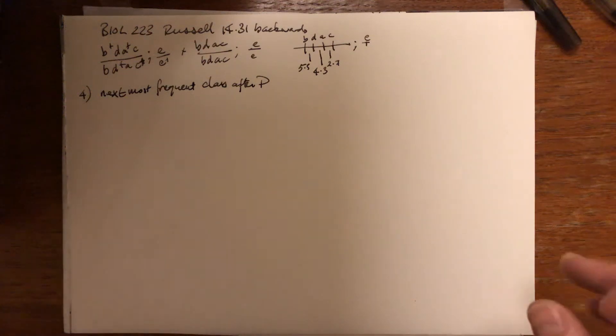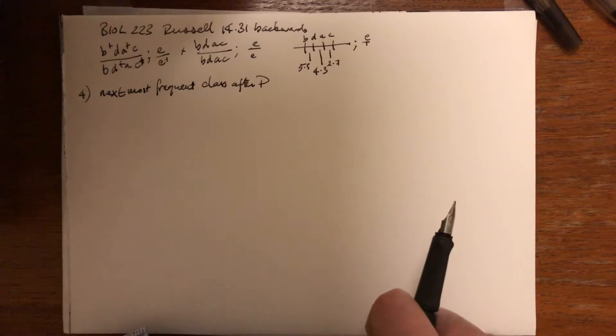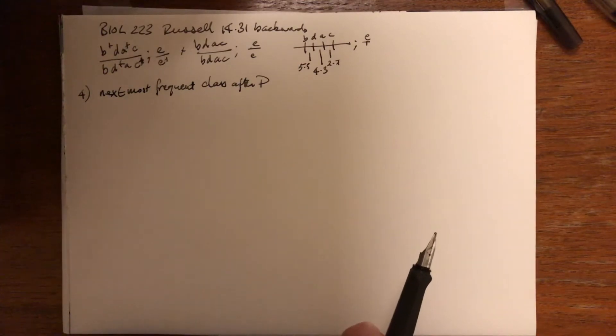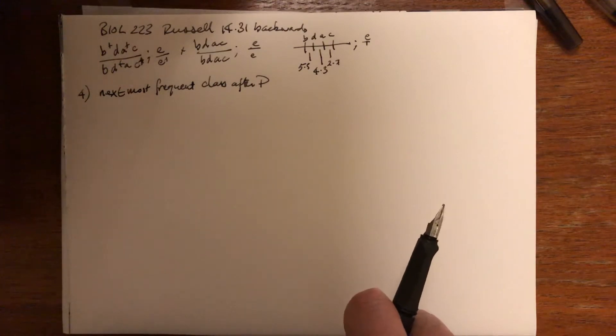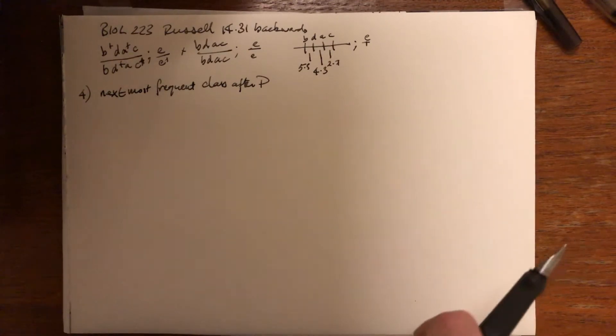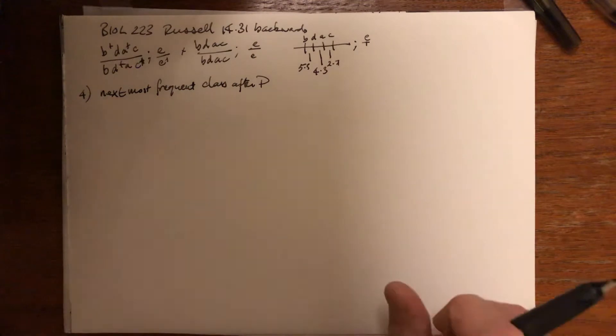This is Biology 223. I am doing Russell genetic mapping in eukaryotes, Chapter 14, Problem 31 backwards in the book. So this is part two of that problem.